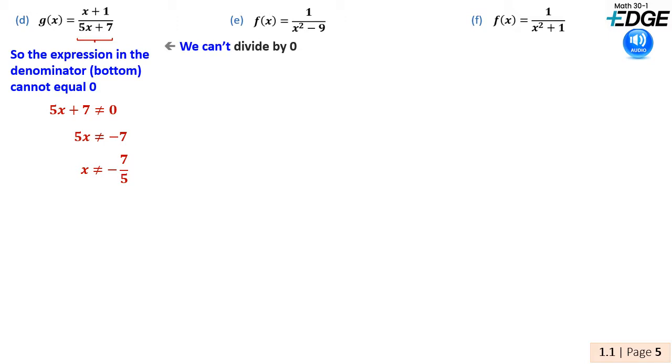Here, 5x plus 7 cannot equal zero. Therefore, x cannot equal negative 7 fifths. There are two ways to write this, set notation and interval notation.